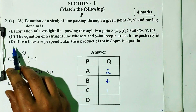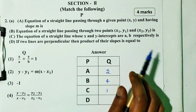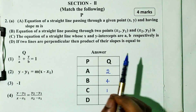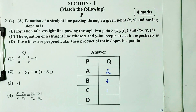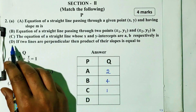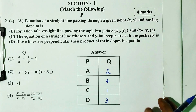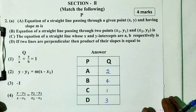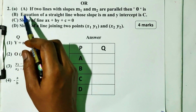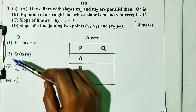Fourth, option d: if two lines are perpendicular, then the product of the slopes is equal to — we will find the answer. So options a, b, c, d — match the following.